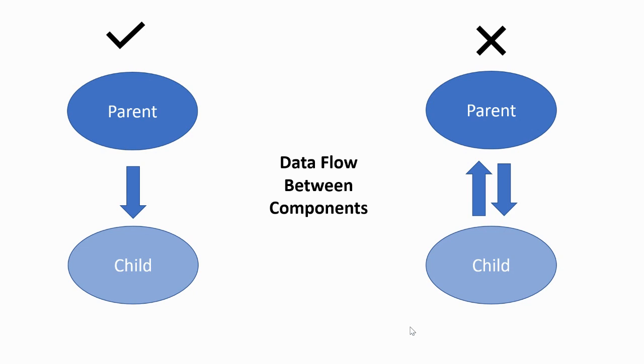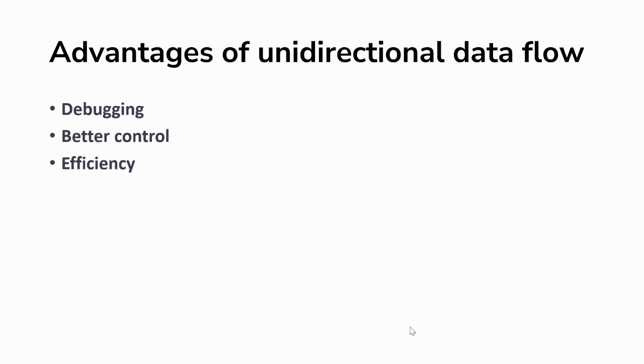There are a few advantages of unidirectional data flow. The first one is debugging. One-way data flow makes debugging much easier. When the developer knows where the data is coming from and where it's going, they can use tools or dry run to find problems more efficiently.